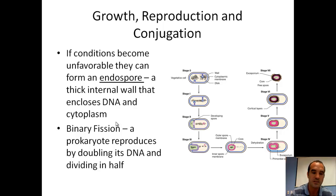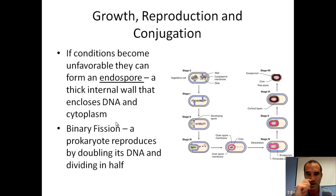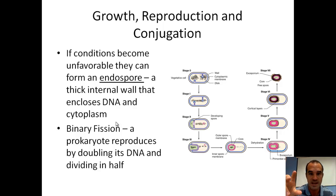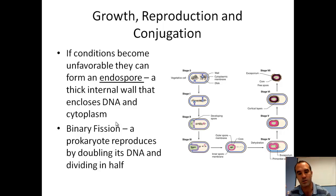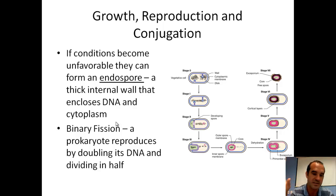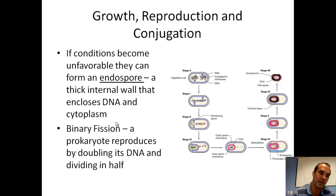If conditions are favorable and they have a food source, bacteria are going to divide by a process called binary fission. It's how they reproduce — they double their DNA and then divide their cell. It's almost like mitosis in a cell, and it's called binary fission.